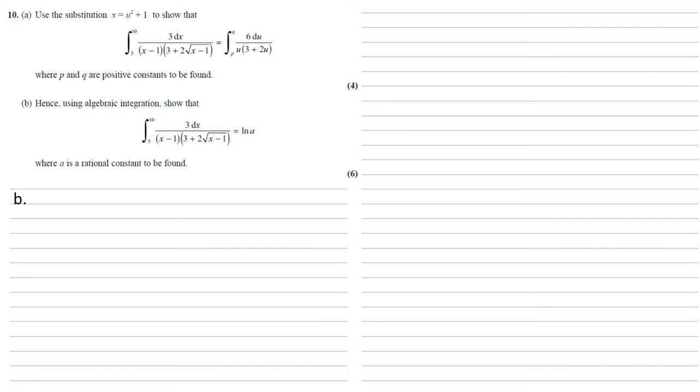Part b, hence using algebraic integration, show that our integral is equal to ln a, where a is a rational constant to be found. Now as this question says hence, we're going to use the first part of the question, so we're going to use the integral that we just found in part a, so the integral between 2 and 3 of 6du all over u times 3 plus 2u.